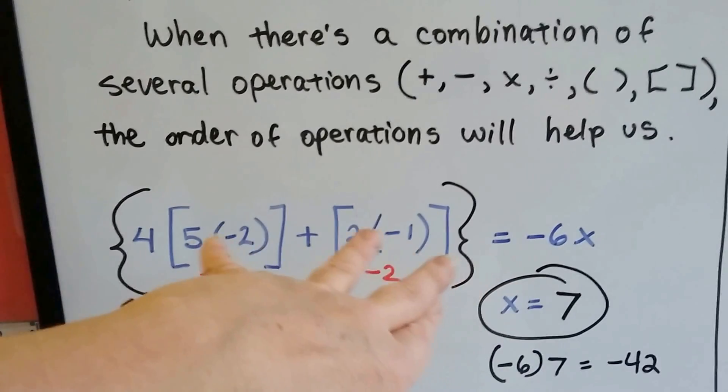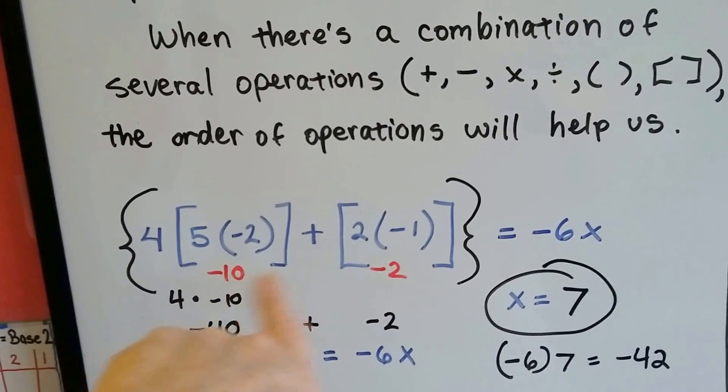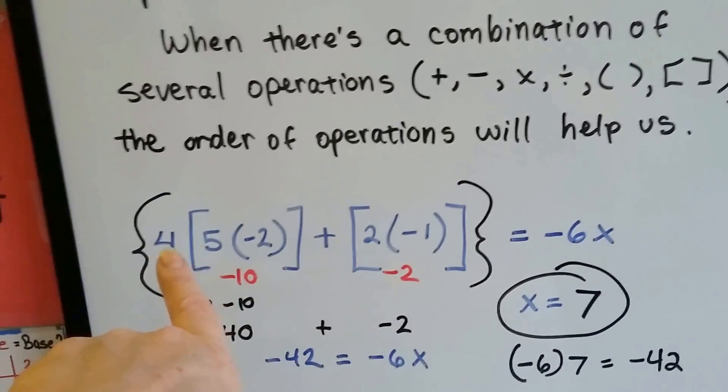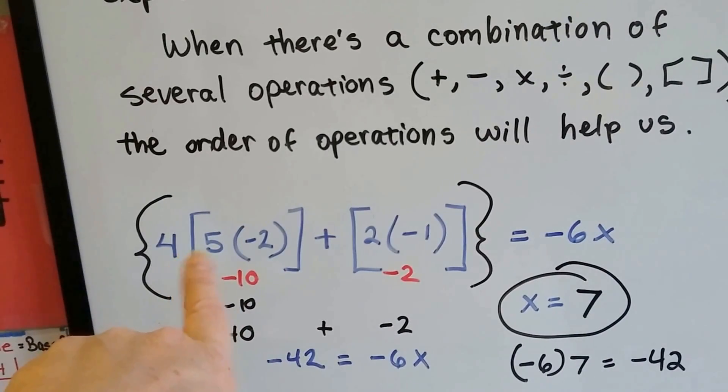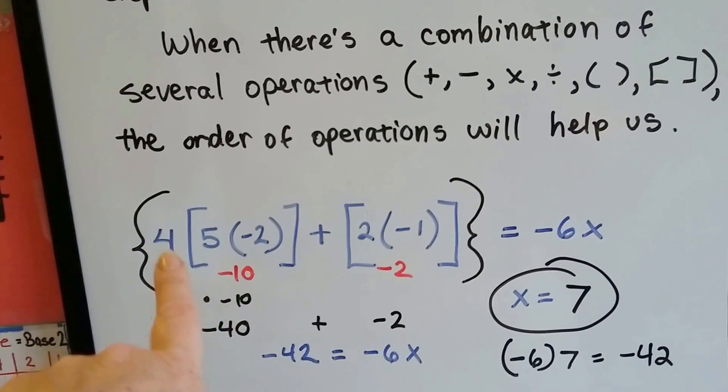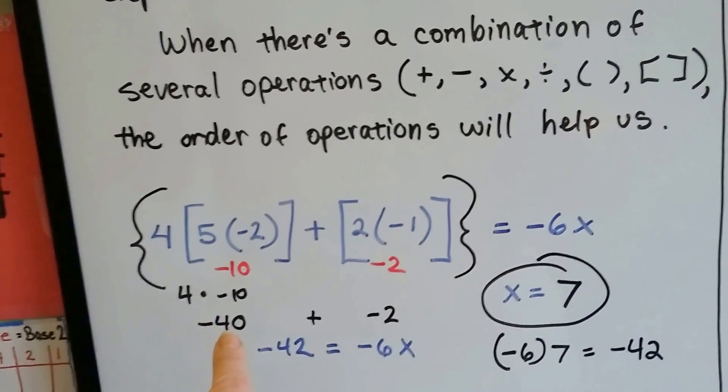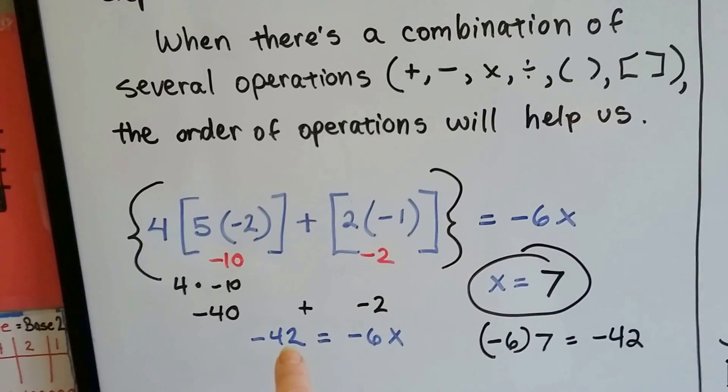Well, now there's this 4 over here. See that sneaky 4? We have to multiply this 4 to that negative 10 before we can add because that's still a multiply. Remember when a number is next to a parentheses or a bracket, that means we have to multiply. So 4 times negative 10 is negative 40. We add this negative 40 to that negative 2 and we get negative 42.